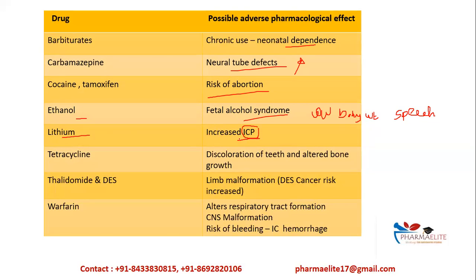Lithium causes increased intracranial pressure (ICP). Tetracycline — which you should be well aware of — causes discoloration of teeth and altered bone growth. These are very typical adverse effects of tetracycline: if consumed during pregnancy, it can cause discoloration of the baby's teeth and insufficient bone growth.